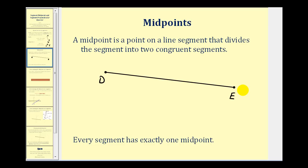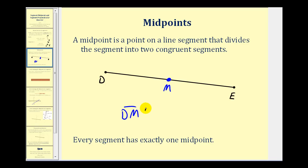Now let's talk about midpoints. A midpoint is a point on a line segment that divides a segment into two congruent segments. So the midpoint of segment DE would be right about here — let's label this point M. If M is the midpoint of segment DE, then segment DM is congruent with segment ME.